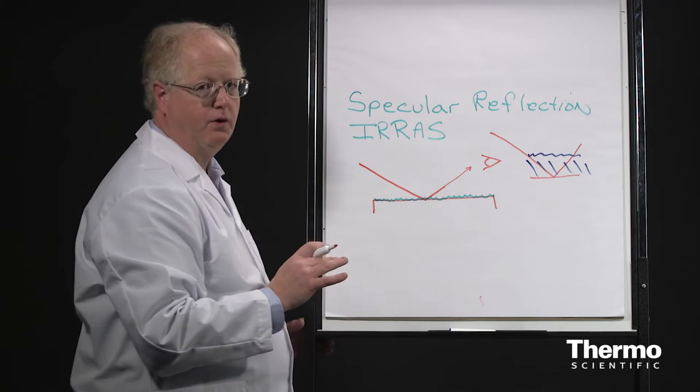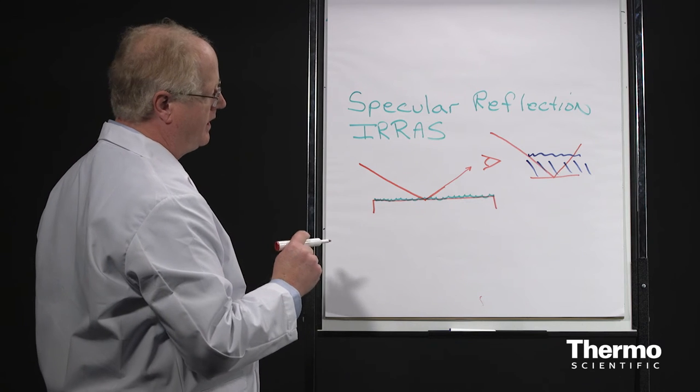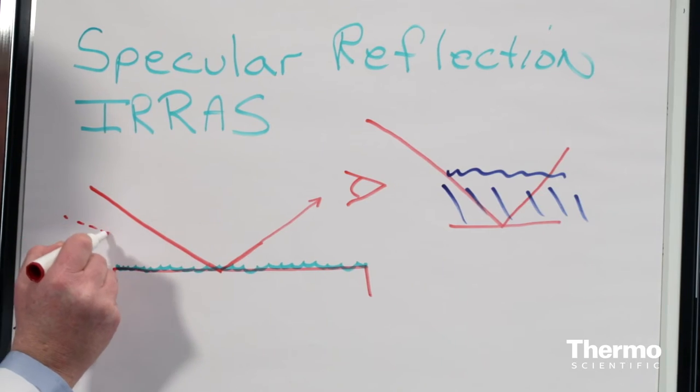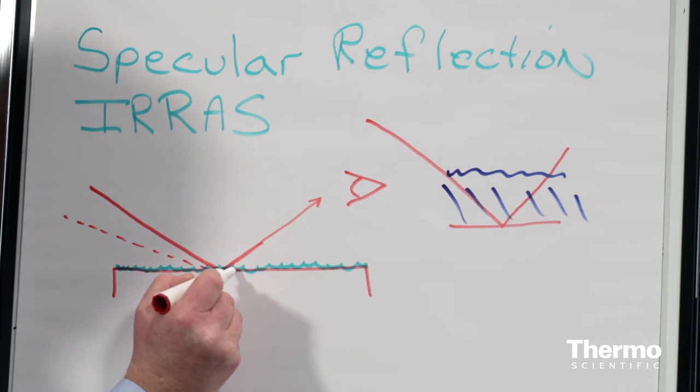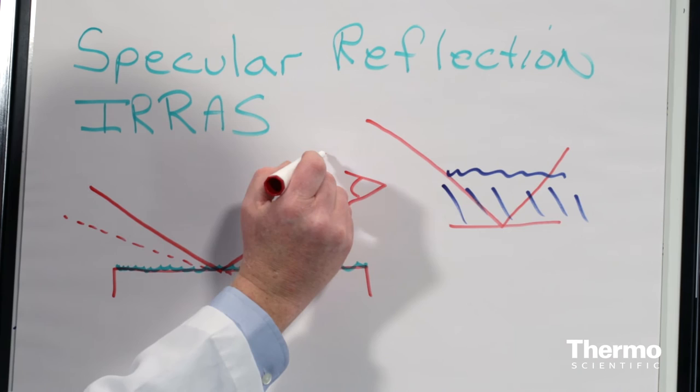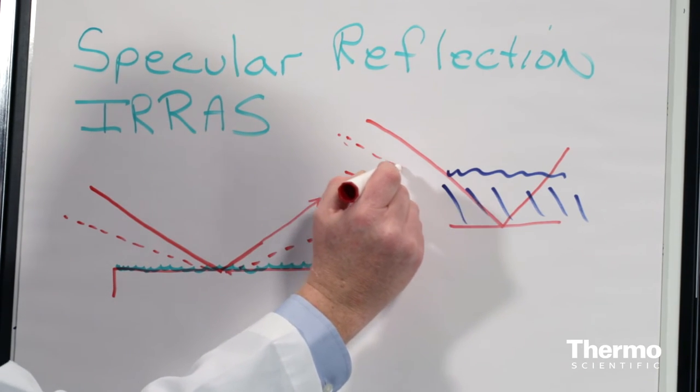As you become more steep, and again, let's look at this enlargement. As it becomes more steep, you can see we're passing through more of the sample.